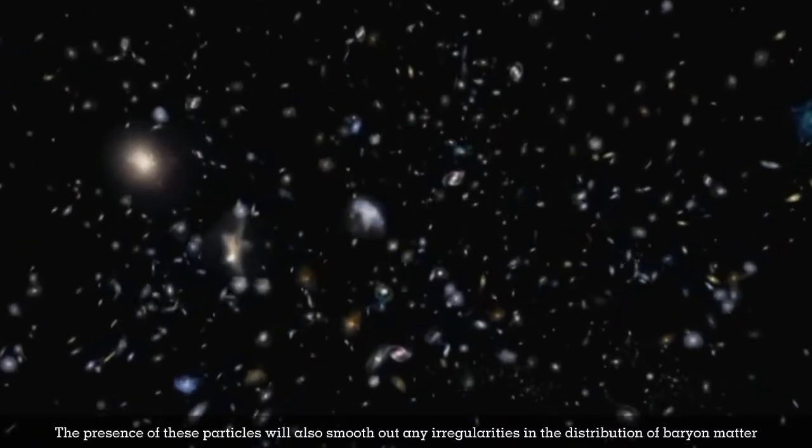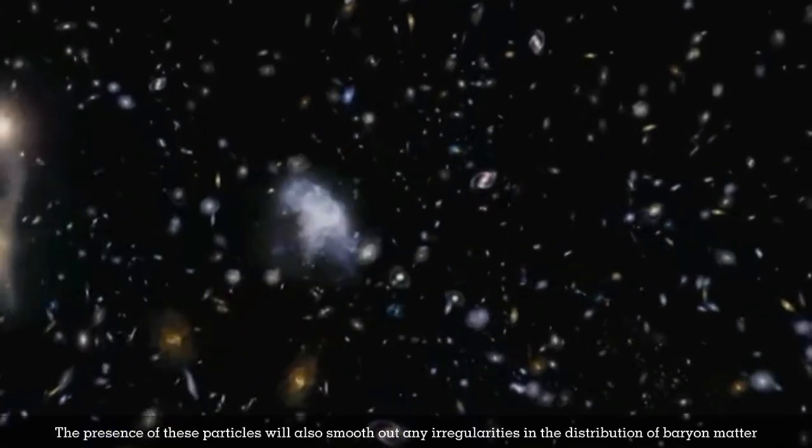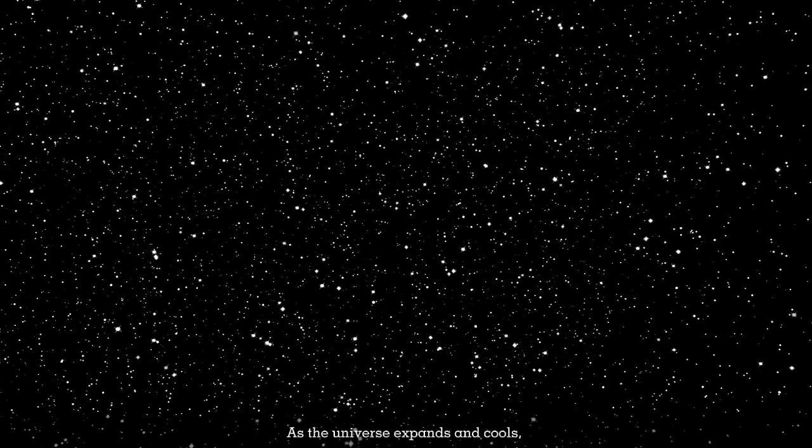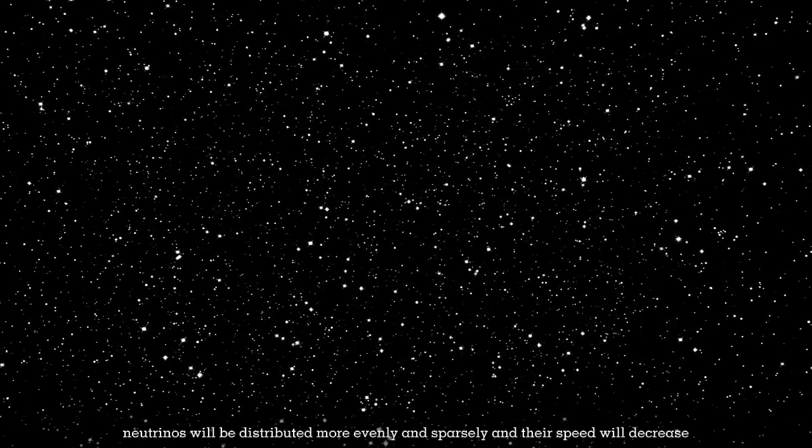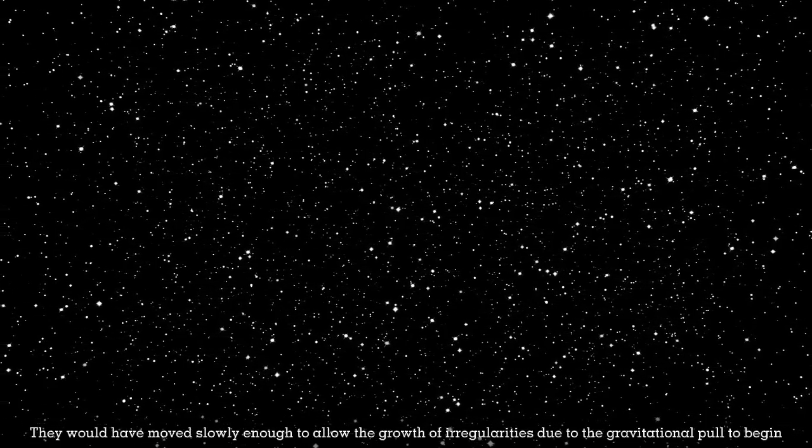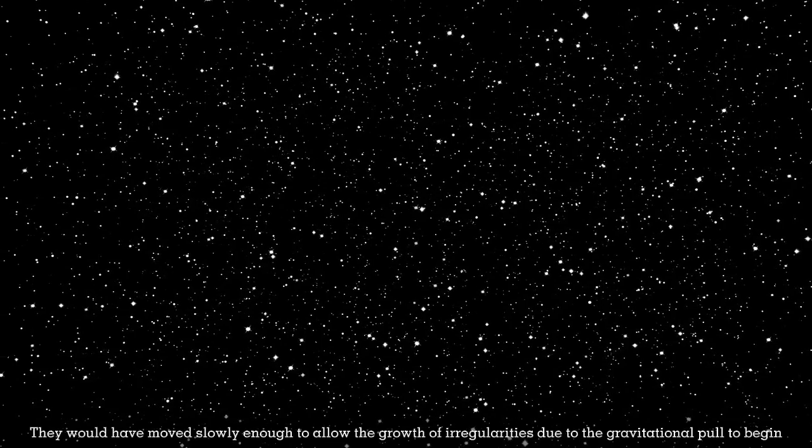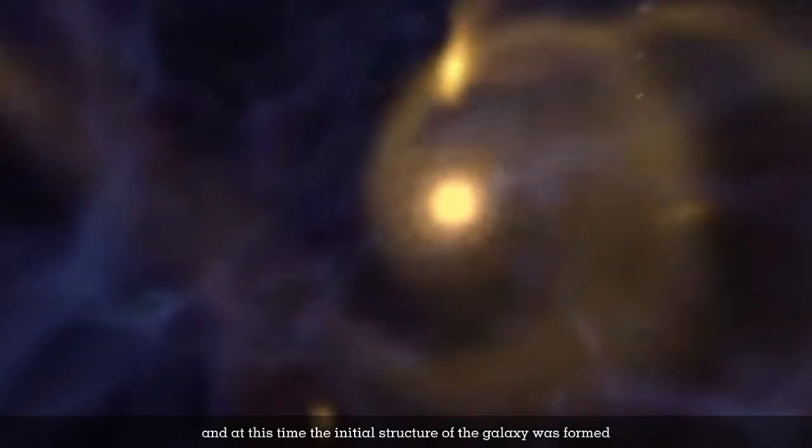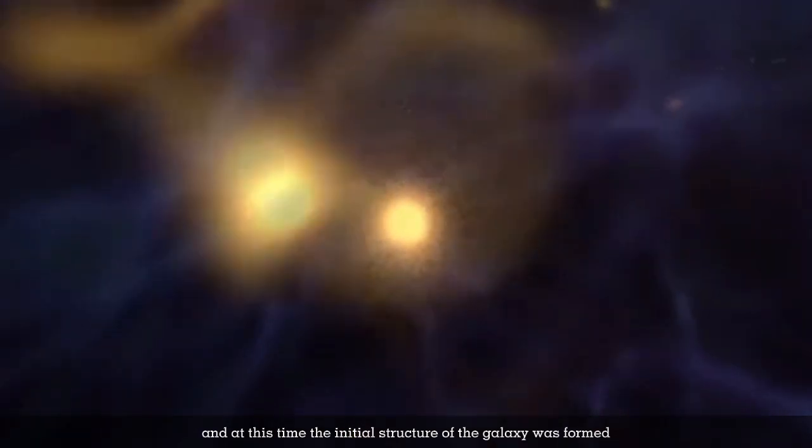The presence of these particles will also smooth out irregularities in baryon matter distribution. As the universe expands and cools, neutrinos become more evenly distributed and sparse, and their speed decreases. They move slowly enough to allow gravitational irregularities to grow, and at this time, the initial galactic structure forms.